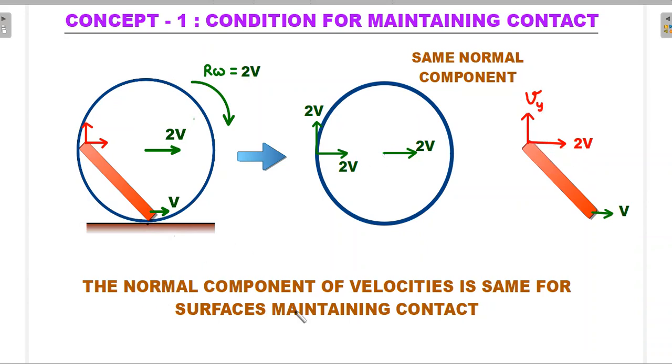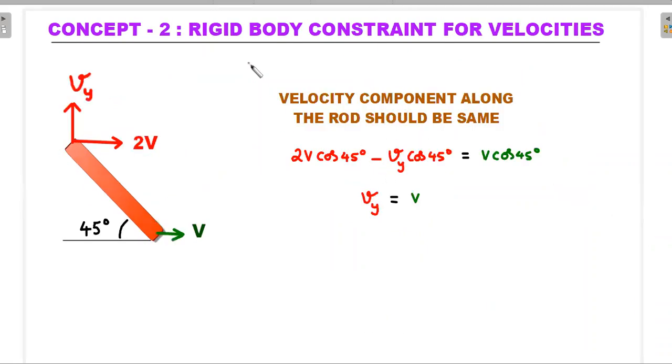The second concept is the rigid body constraint for velocities. If two material points on a rigid body which is in general planar motion are to be considered, then velocity component along the line joining them—in this case that rigid body is the rod—so if this point for which we have already ascertained 2v using concept one, but this unknown velocity is vy.